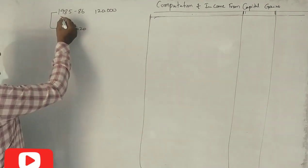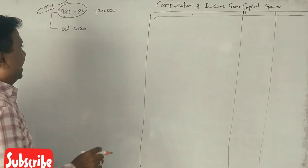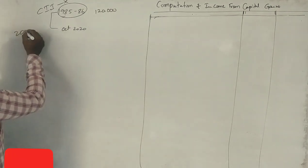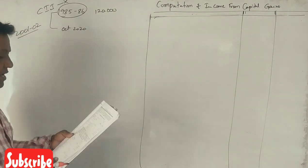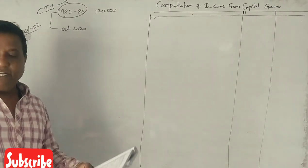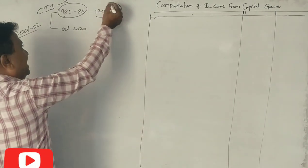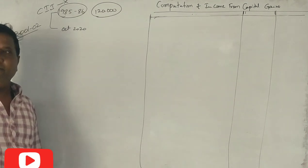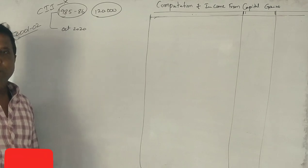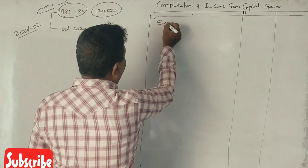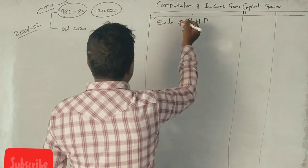In 1985-86, we have no CII. So what do we use? Fair market value as on 1st April 2001. This is the sale of residential house property.